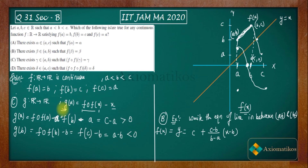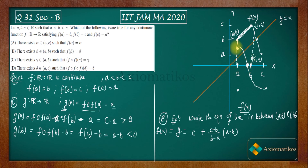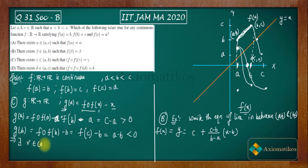G is continuous because the composition of two continuous functions is continuous, so F(F(x)) is continuous, and the difference with x is also continuous. Since G(A) > 0 and G(B) < 0, by the Intermediate Value Theorem there exists gamma in (A, B) such that G(gamma) = 0, meaning F(F(gamma)) = gamma. Therefore option C is correct.